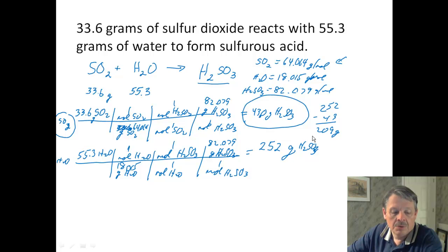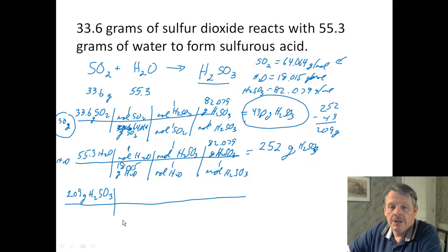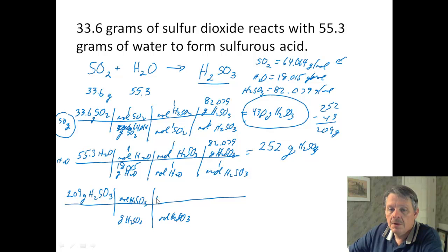So now if I work my way backwards and I start with 209 grams of my product, which is H2SO3, and I work back to the reactant that I had too much of, which in our case is water, because we had more water than we needed. So we have to get rid of grams of H2SO3. We have to go to moles of H2SO3. And then we have to go from moles of H2SO3 to moles of water.